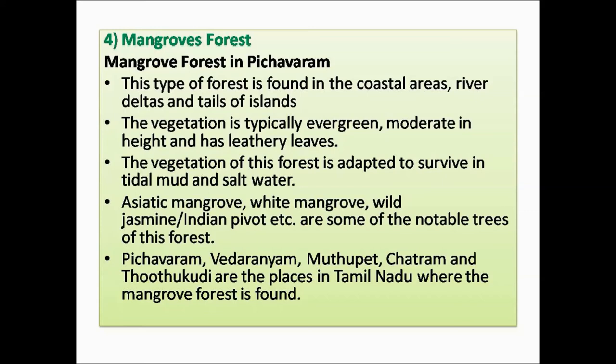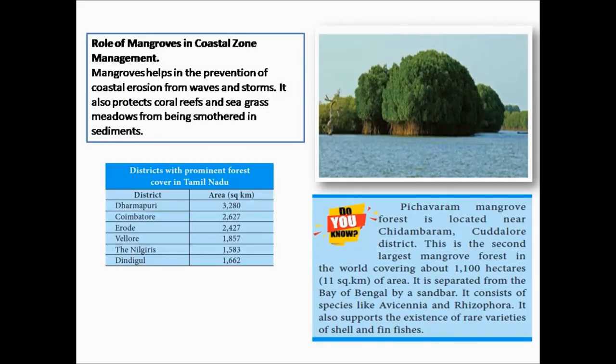Asiatic mangrove, white mangrove, wild jasmine, and Indian pivot are some notable trees of this forest. Pichavaram, Vedaranyam, Mutupet, Chhatram, and Thoothukudi are the places in Tamil Nadu where mangrove forest is found to a considerable extent. Mangroves help in the prevention of coastal erosion from waves and storms — they act as a barrier. They also protect coral reefs and seagrass.